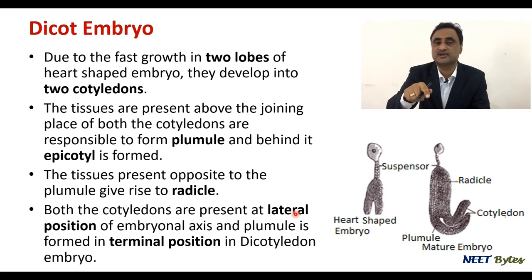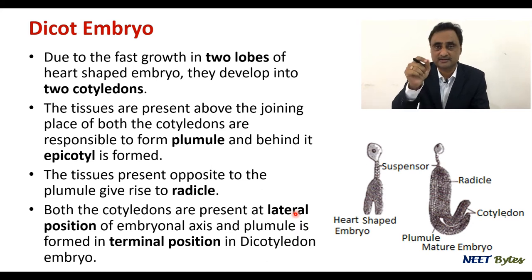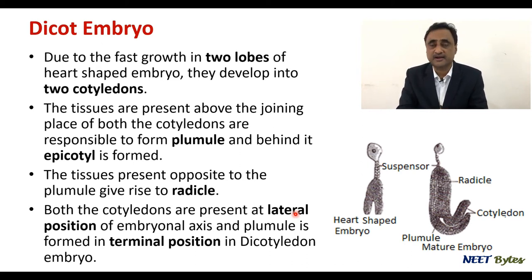In case of dicot, cotyledons are laterally placed and the plumule is placed at the apical portion. The reverse happens in monocot. This is often asked in NEET — in dicot, cotyledons are laterally placed and the plumule is at the apical spine.